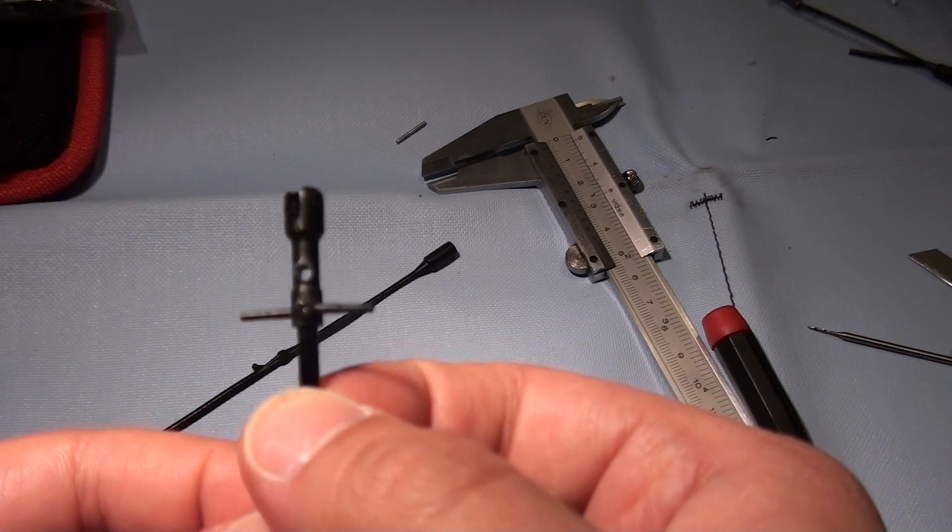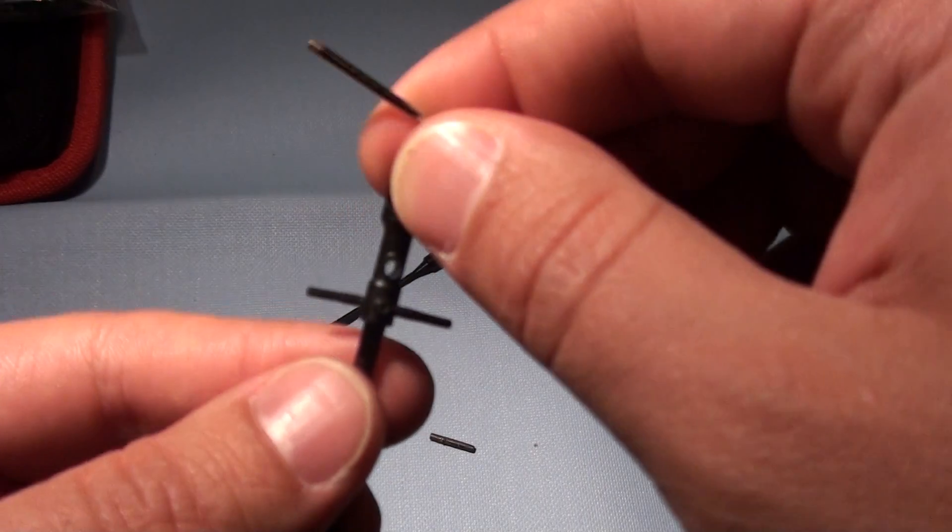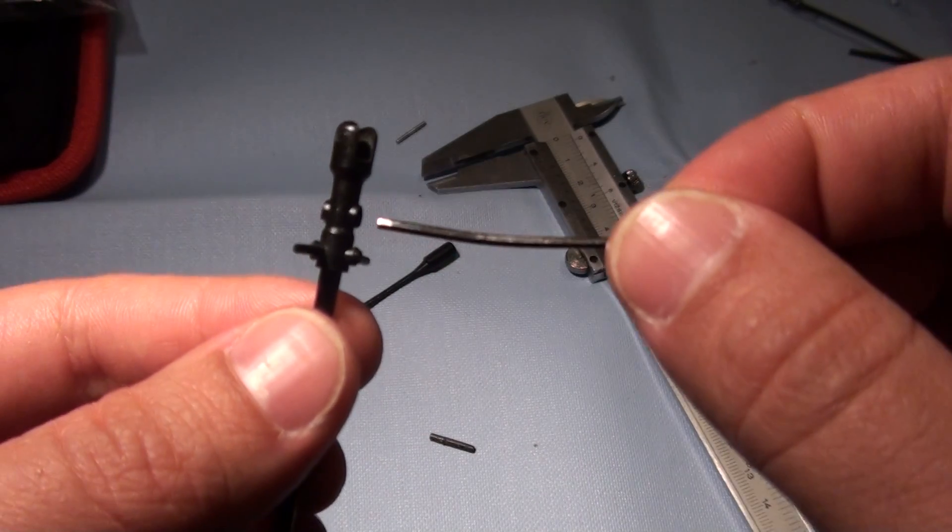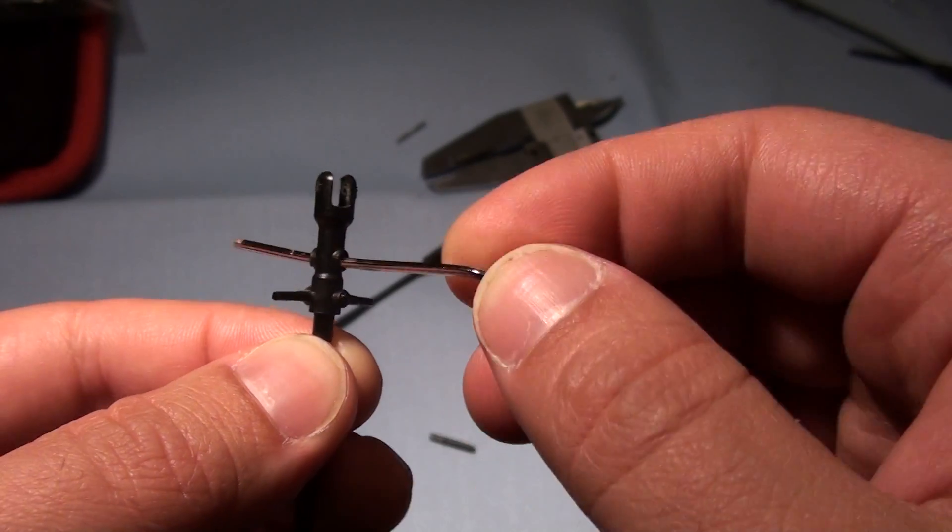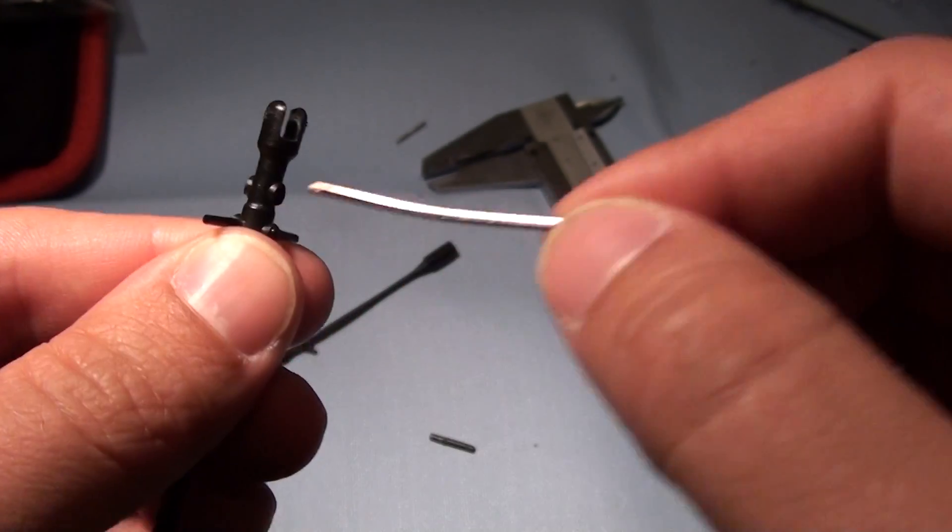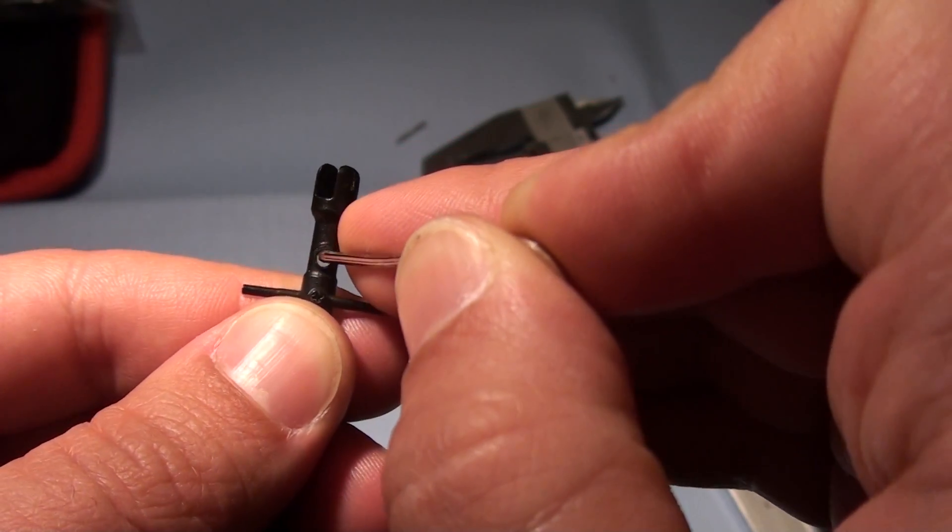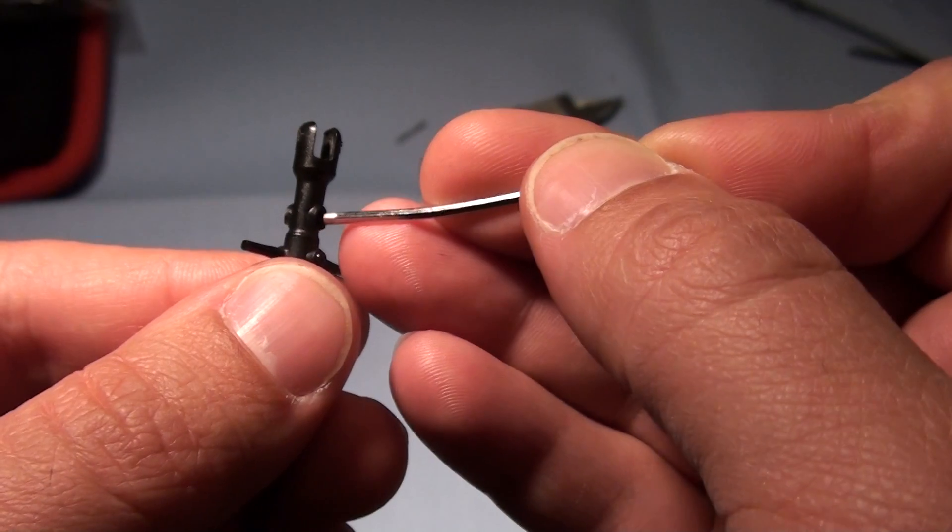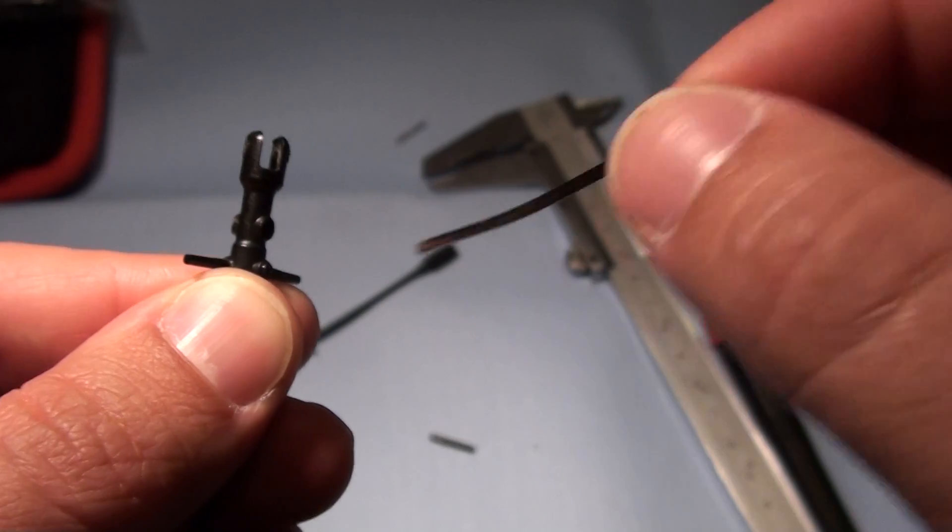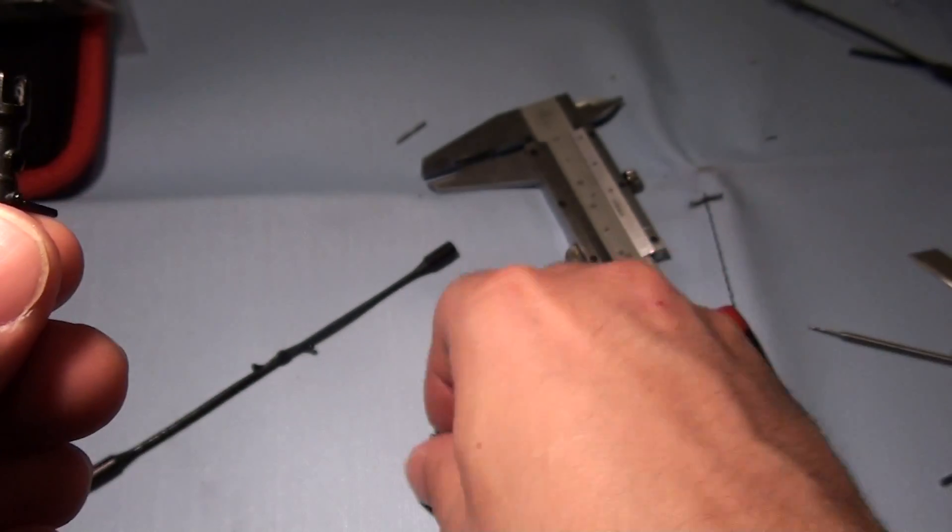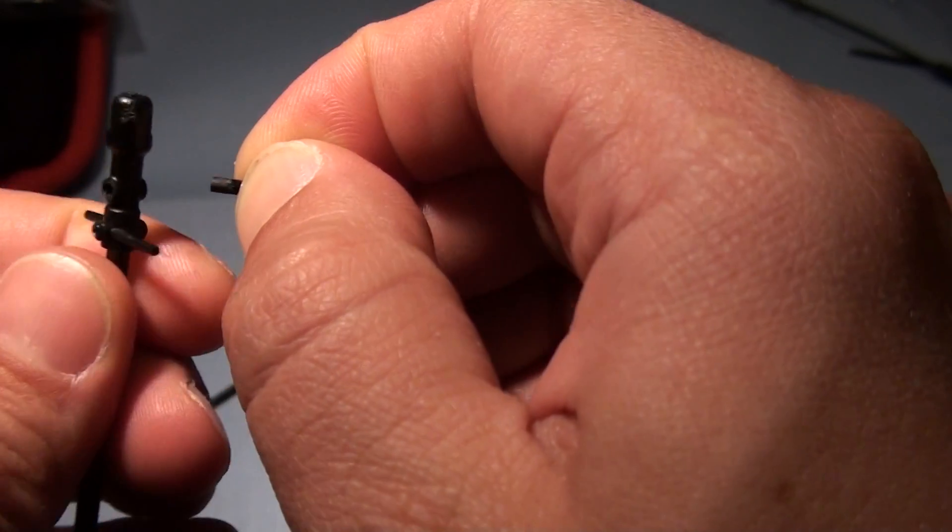Well the problem I saw on this helicopter main shaft is that the pin that should be here breaks off too easily on a simple crash because it's made of plastic and it's not a full piece that goes through, but it's made of two pieces, one piece from here and the other piece from here.